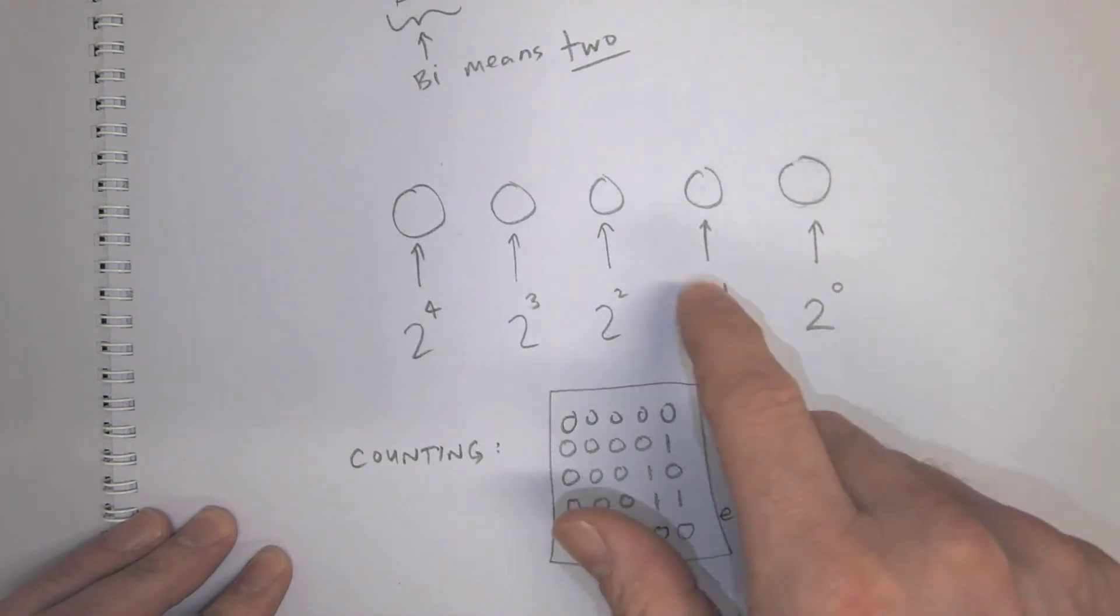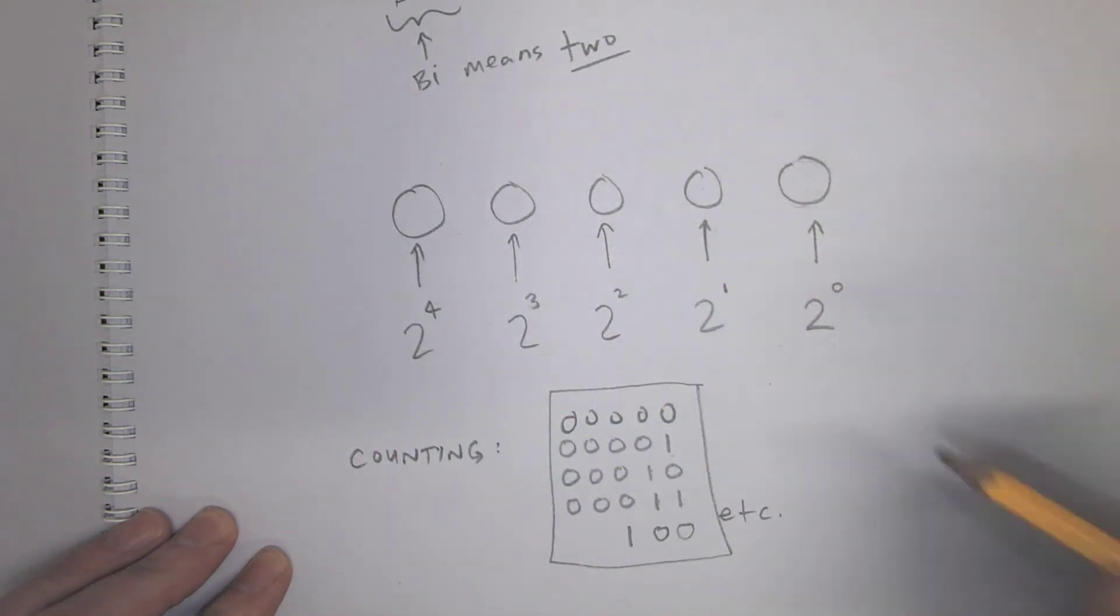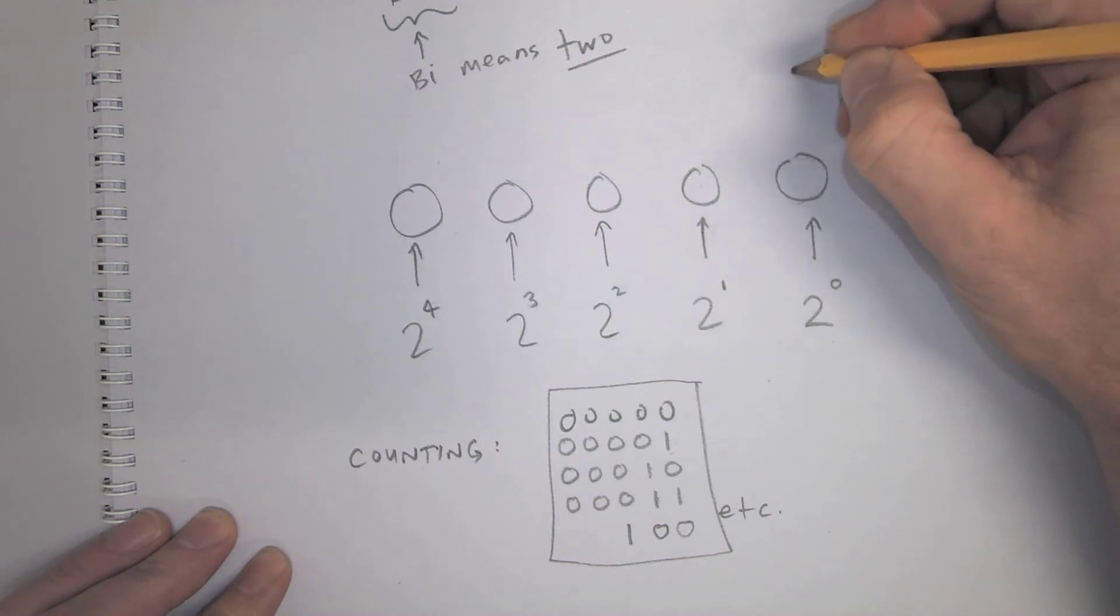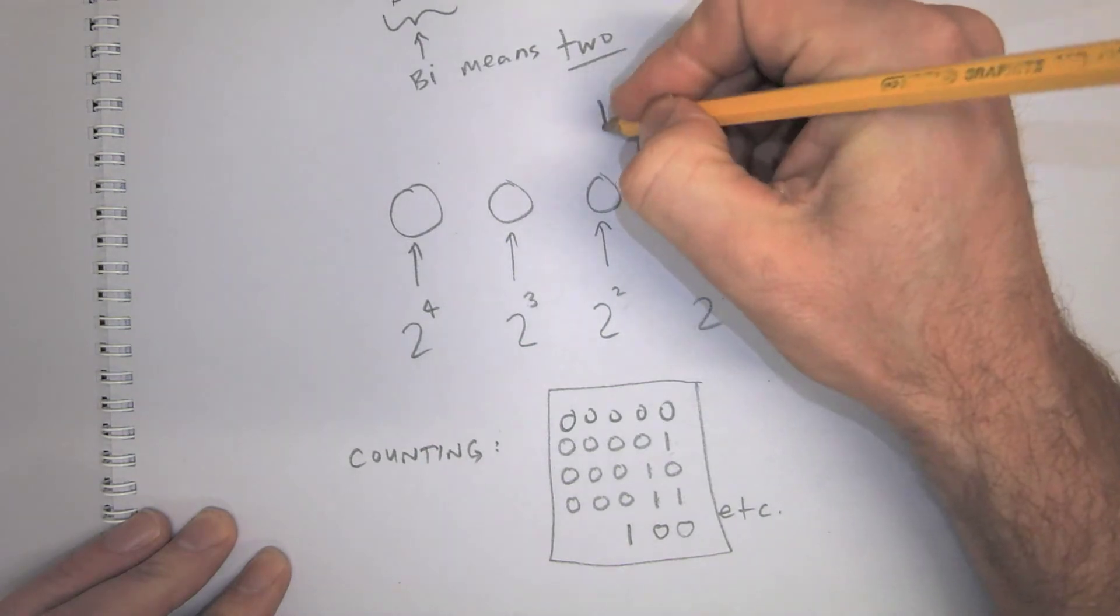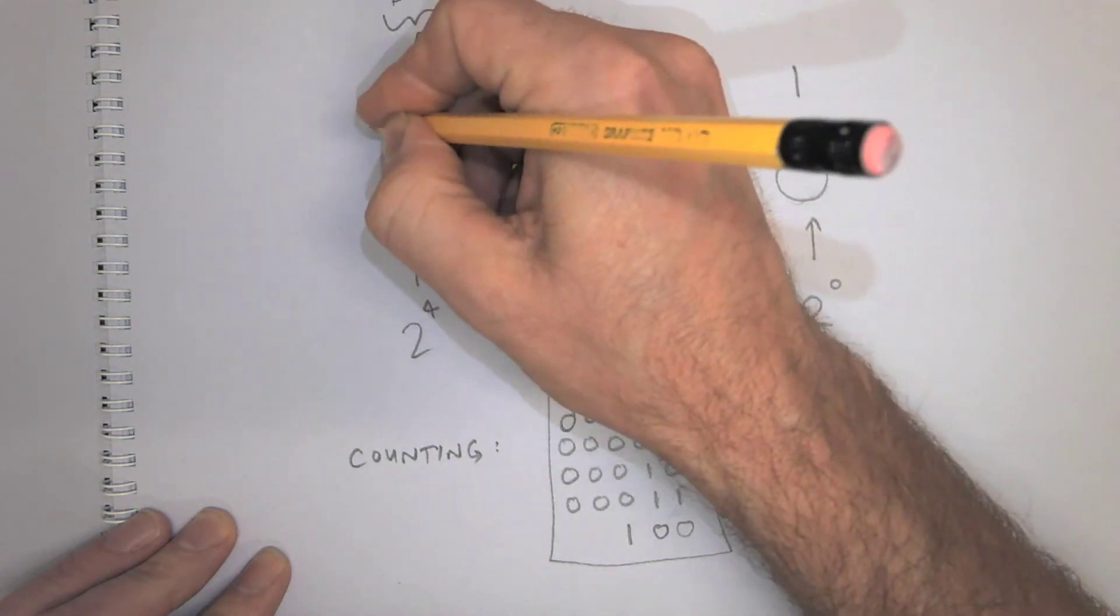It's 2 to the 0, 2 to the 1, 2 to the 2, 2 to the power of... So 2 to the power of 0 is 1. 2 to the power of 1 is 2. 2 to the power of 2 is 4, 8, 16.